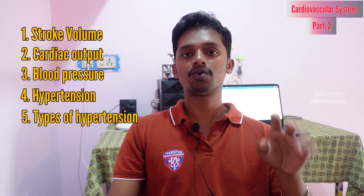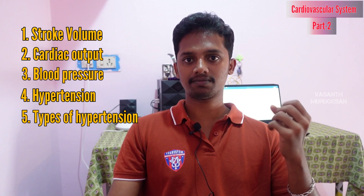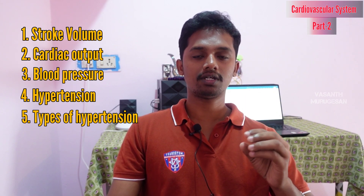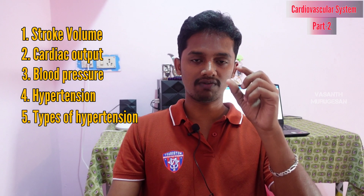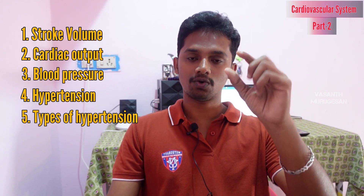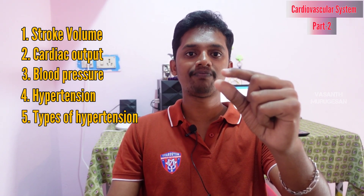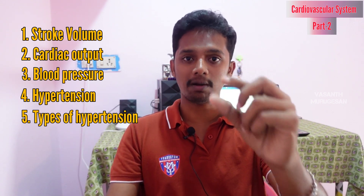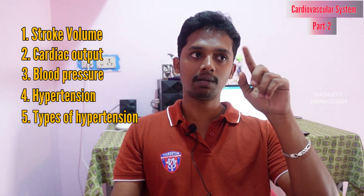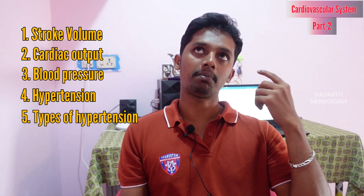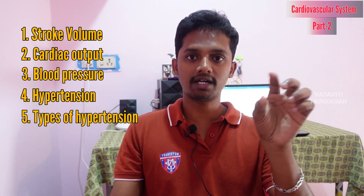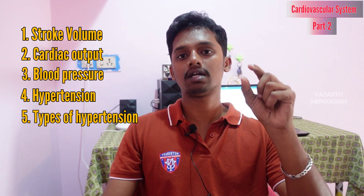Now we have to understand the third term: blood pressure. Blood pressure is the pressure exerted by blood on the walls of blood vessels. A blood vessel can sometimes be large, sometimes it can be a lung vessel, and sometimes it can be relaxed. The pressure of blood flowing through the vessel is what we call blood pressure. When pressure is low, the blood flow is going to be very low. That is why we need to understand blood pressure.